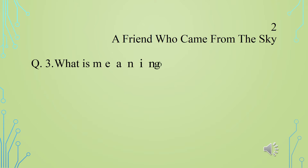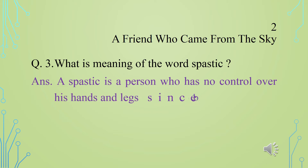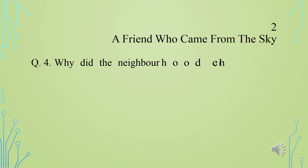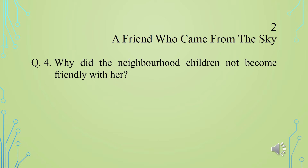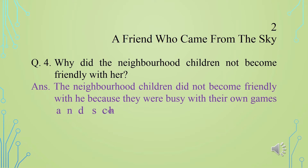Question 3: What is the meaning of the word spastic? Answer: A spastic is a person who has no control over his hands and legs since birth. Question 4: Why did the neighborhood children not become friendly with her? Answer: The neighborhood children did not become friendly with her because they were busy with their own games and school.